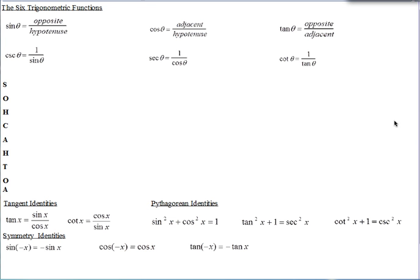These are the notes for AP Calculus on the topic of trigonometry. First, let's take a look at the six trigonometric functions. Let's start with the three basic ones, which are sine, cosine, and tangent.